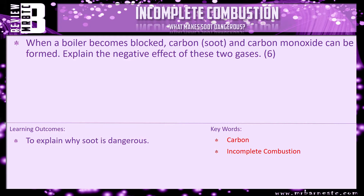I've got a review question for you bringing everything together on incomplete combustion: 'When a boiler becomes blocked, carbon soot and carbon monoxide can be formed — explain the negative effect of these two gases.' The two marks for carbon soot you should have fresh in your mind. Go back to the carbon monoxide video — the link's in the top right hand corner if you can't remember that one.